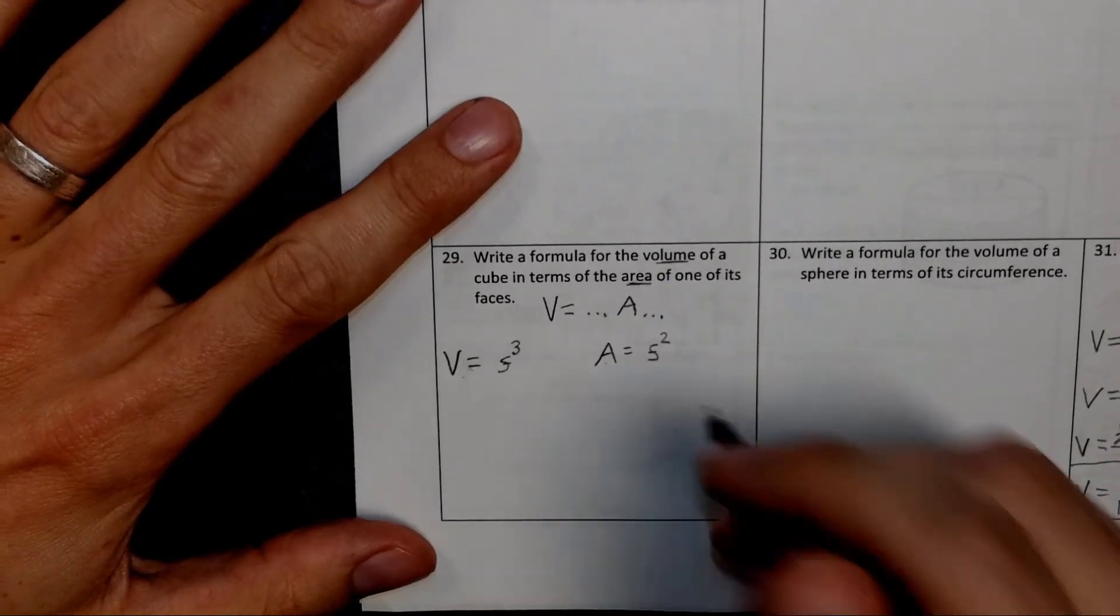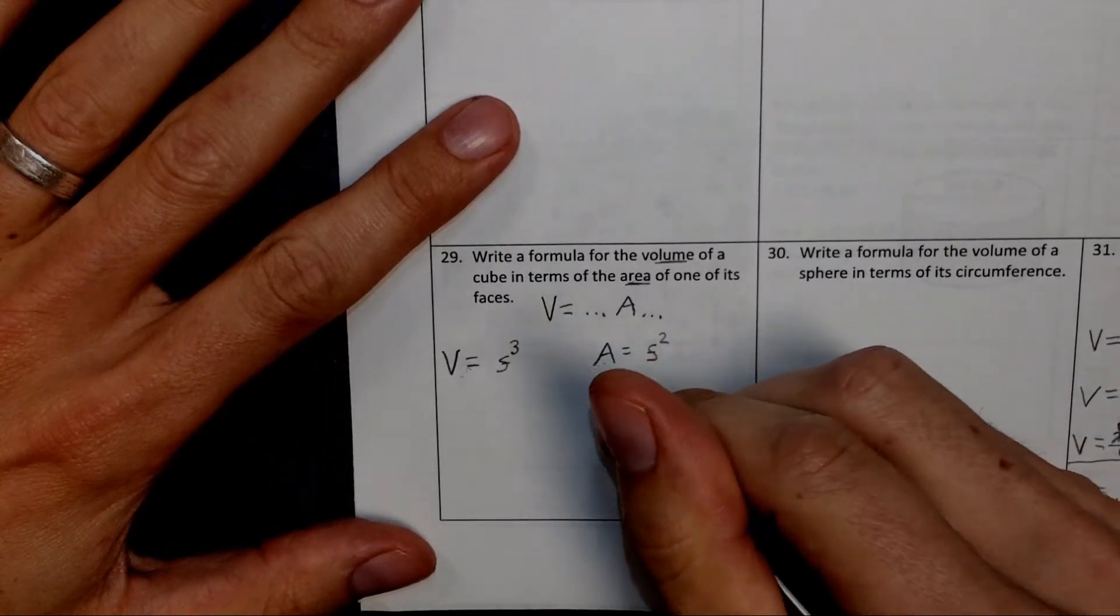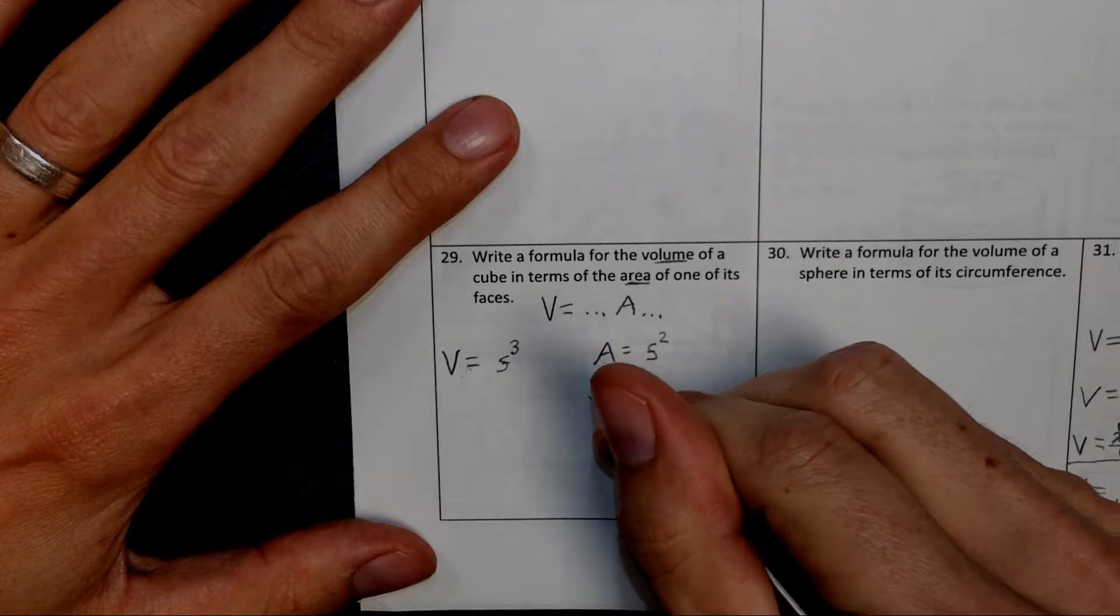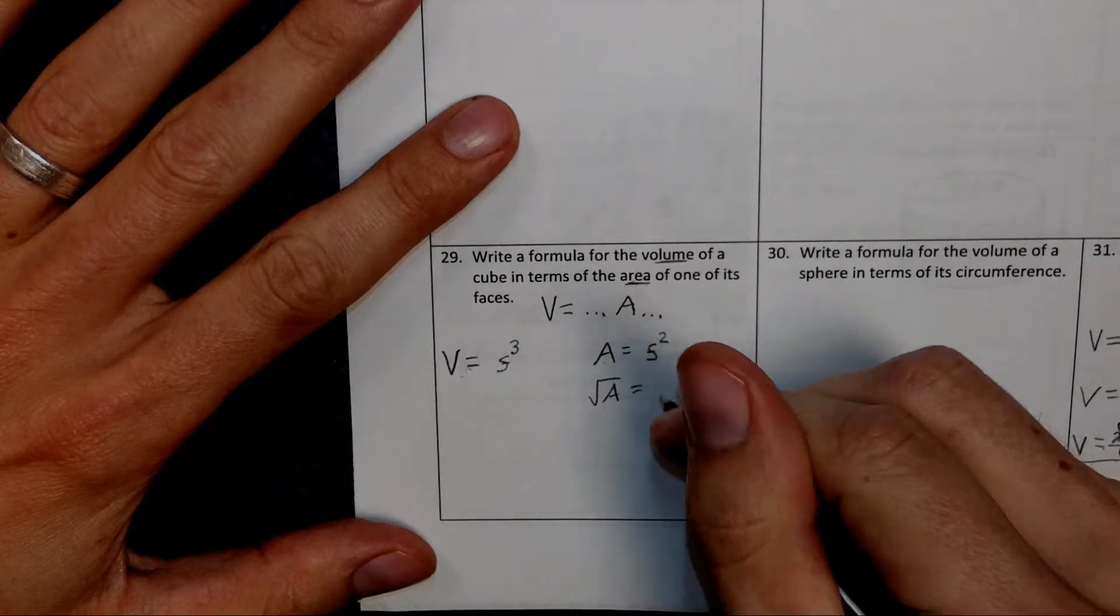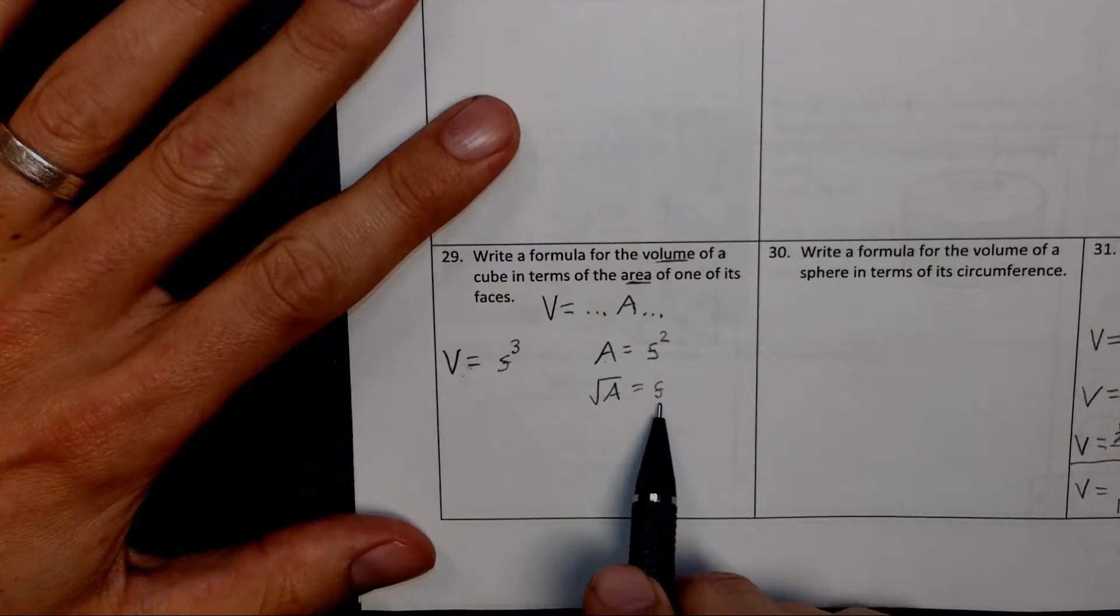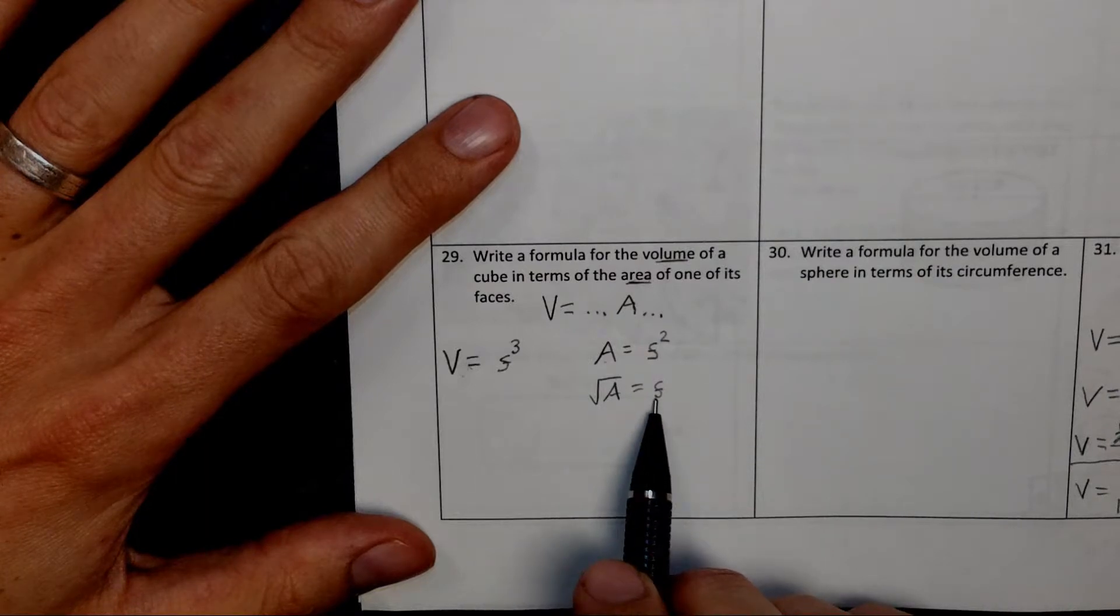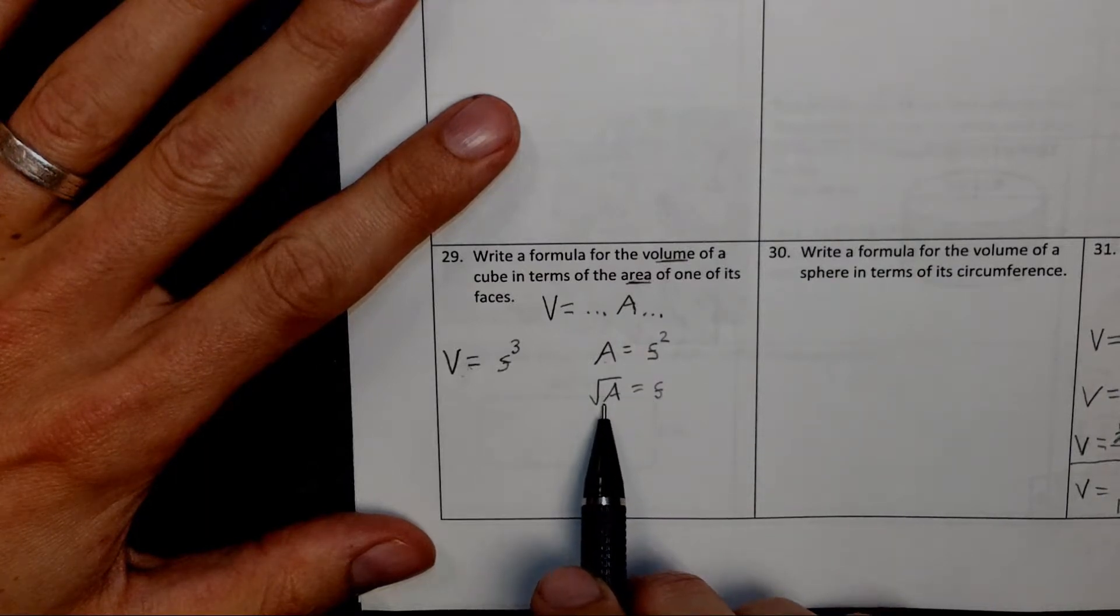I want to solve for S. So I would need to take the square root of both sides. So then the square root of A would be equal to S. Or in other words, we're saying the side length here is the square root of the area. So this is the side length written in terms of the area.